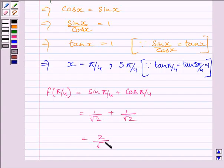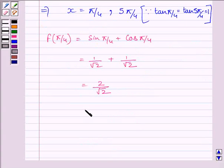On rationalizing, we get 2 root 2 upon 2. 2 and 2 will get cancelled and we get f(π/4) equal to root 2.